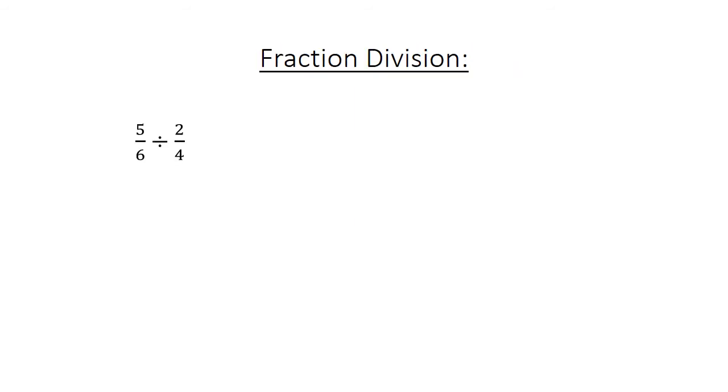Fraction division. 5 over 6 divided by 2 over 4 equals 5 over 6 times 4 over 2, equals 20 over 12, equals 1 and 2 over 3.